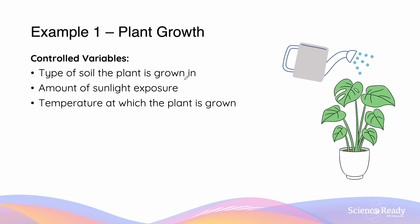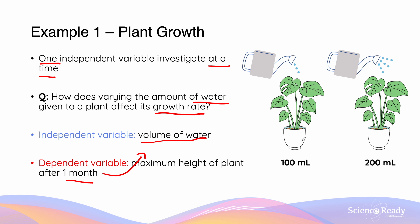We are only going to investigate the effects of one variable at a time. Since volume of water is our independent variable, all other variables must therefore be controlled. These include the type of soil the plant was grown in, the amount of sunlight exposure, and the temperature at which the plant was grown. In practice, where multiple plants are grown with different volumes of water, each must be the same plant, with the same amount and type of soil, grown at the same temperature with the same exposure to sunlight.